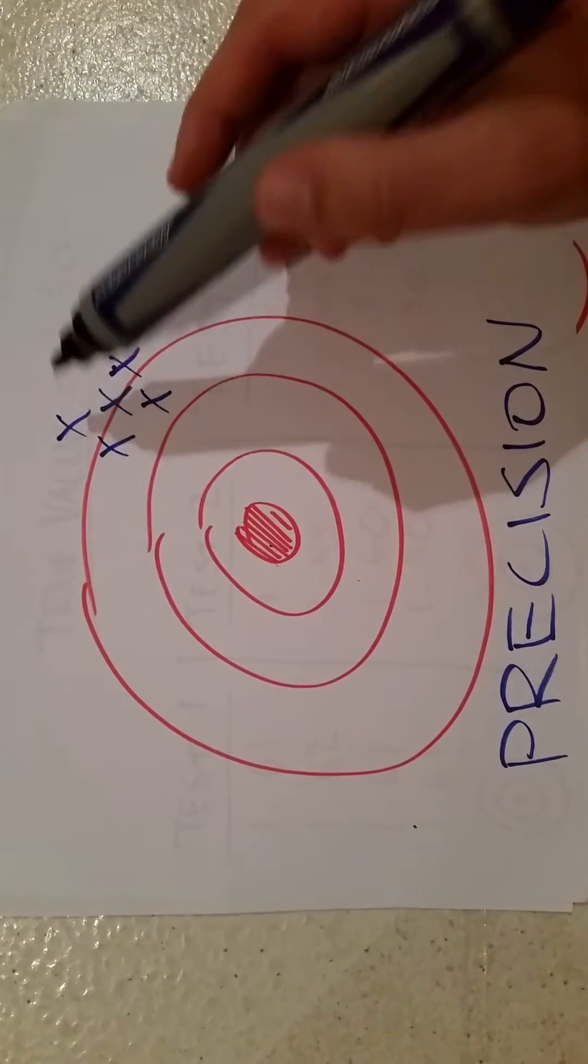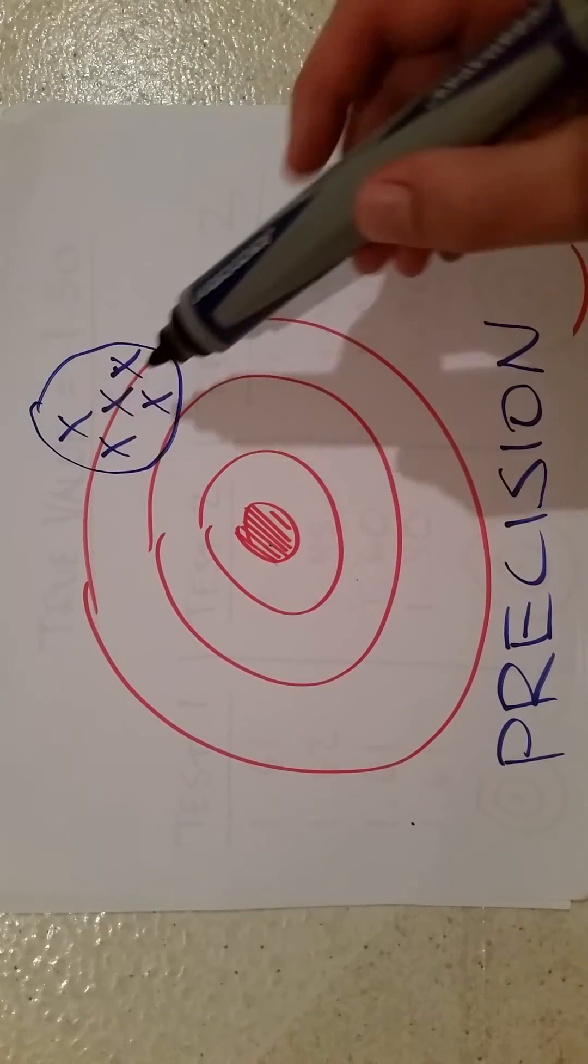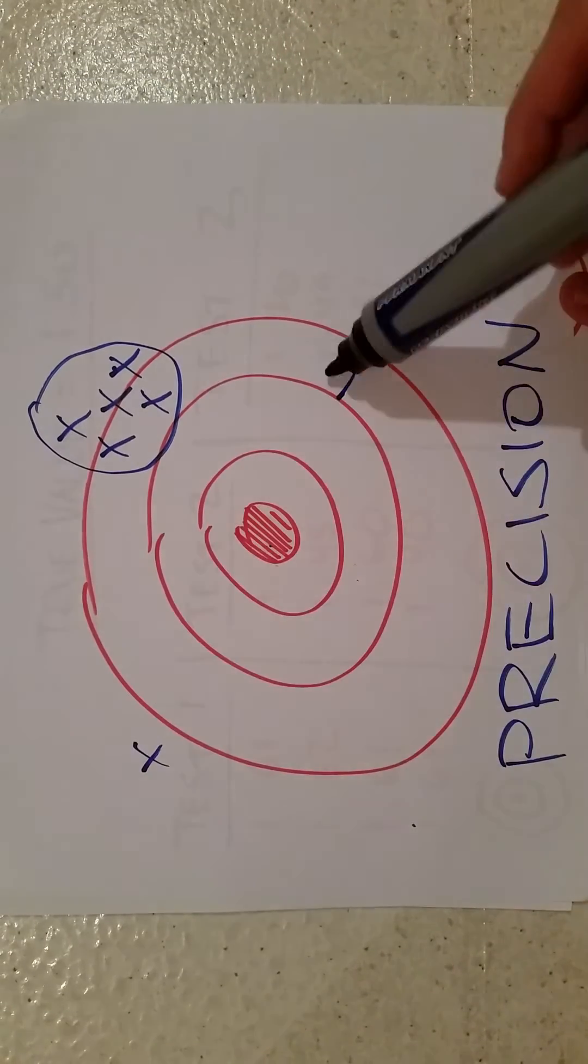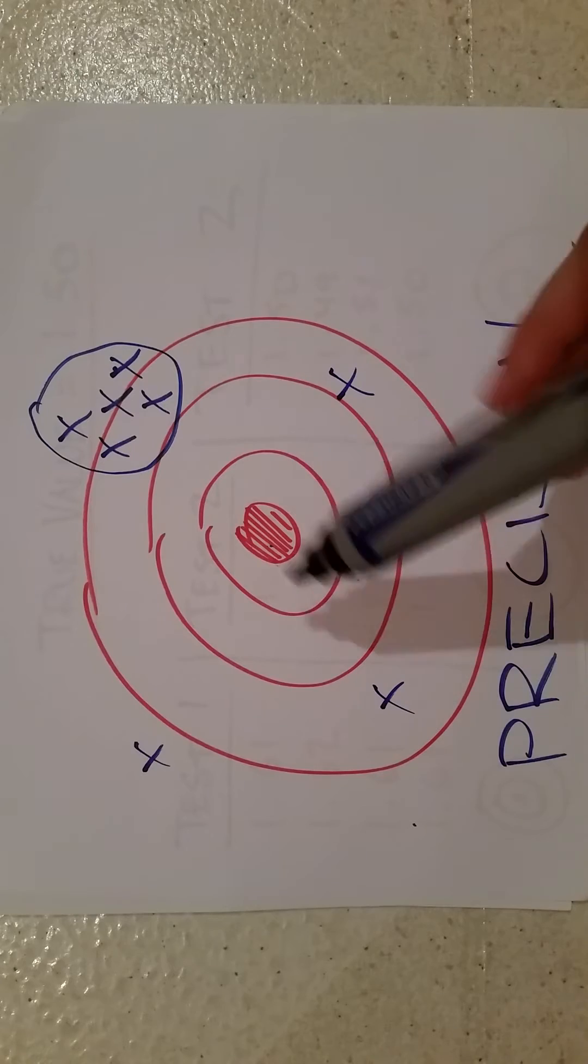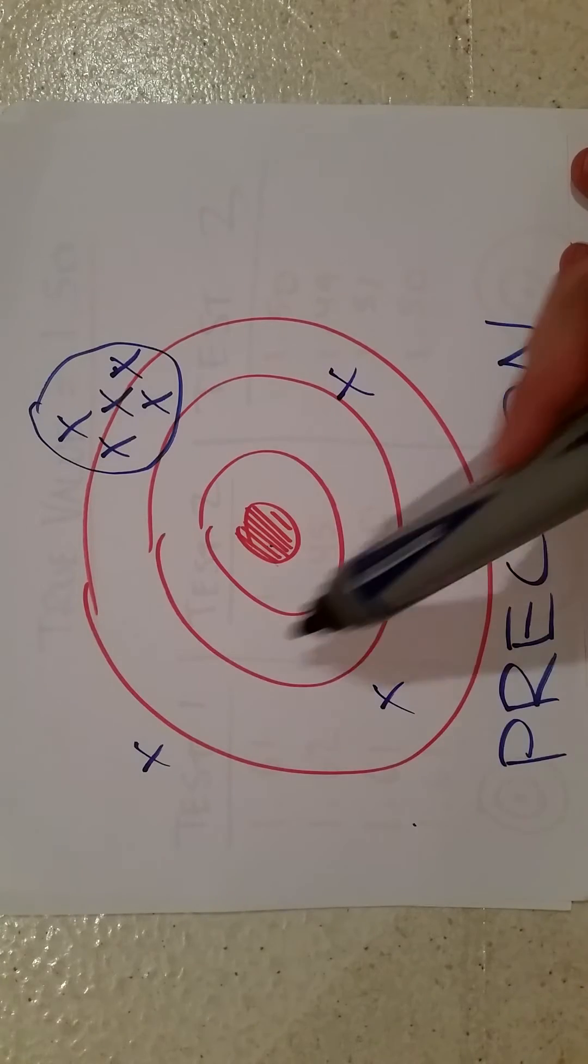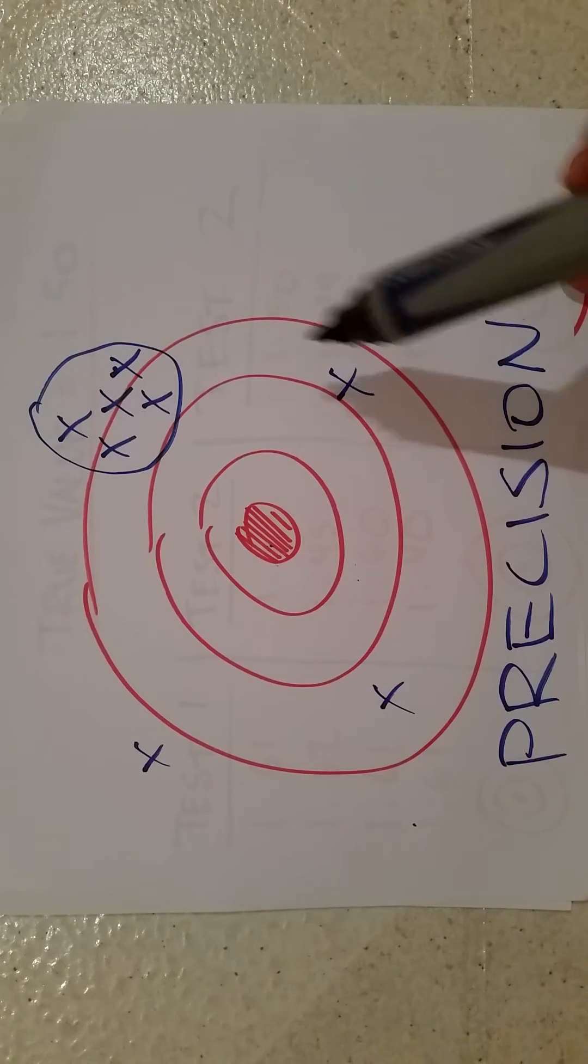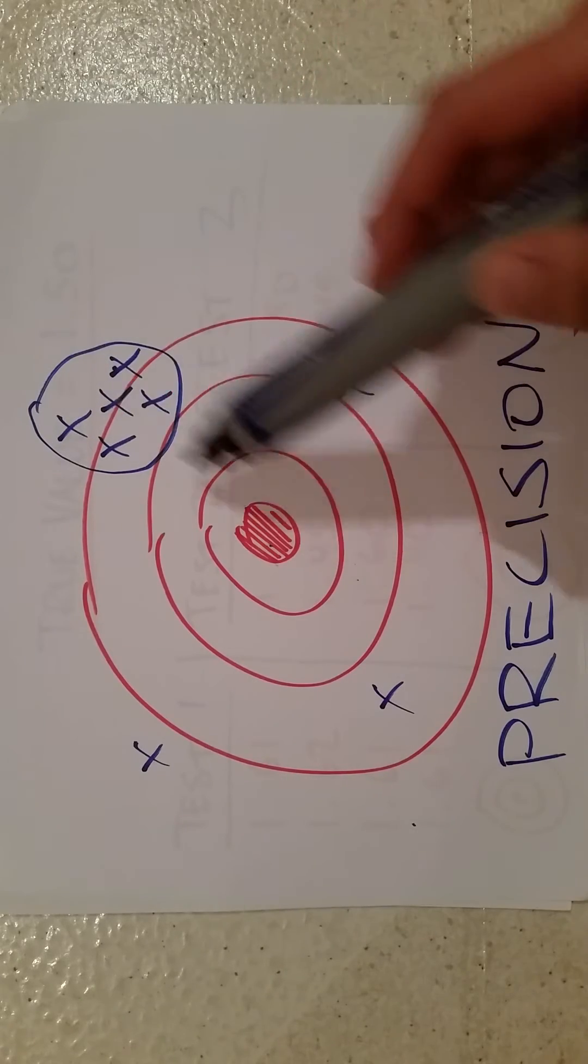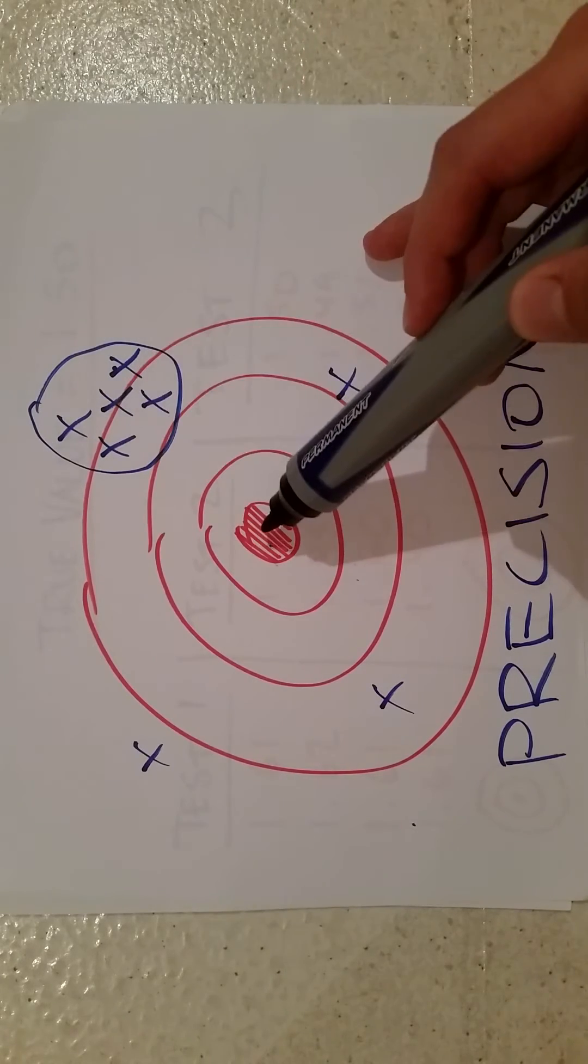However, if our succeeding shots all land here, you'll notice that this tight grouping here is very precise compared to the other shots that looked more like this or more spread out. These shots are not very precise, whereas these shots are very precise, even though they're not accurate or even though they're a good distance away from the center of this bullseye.